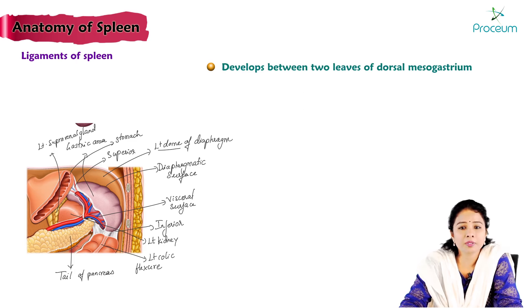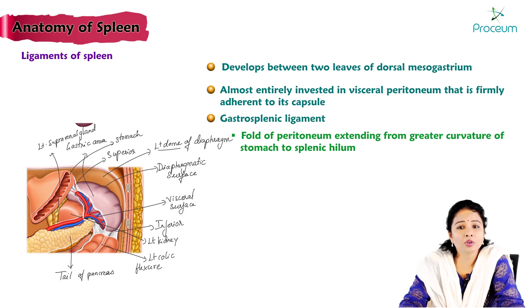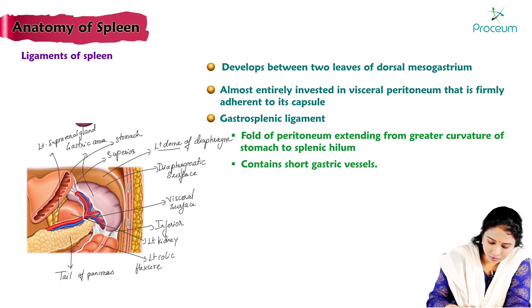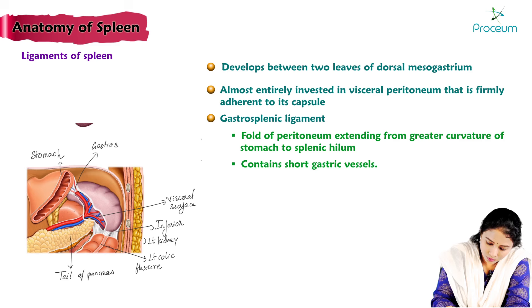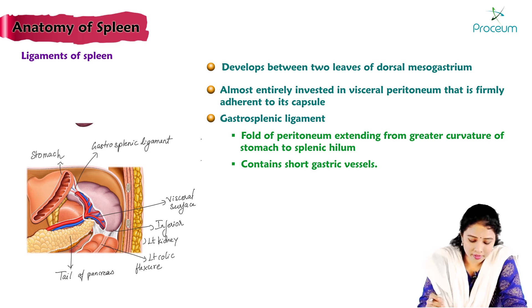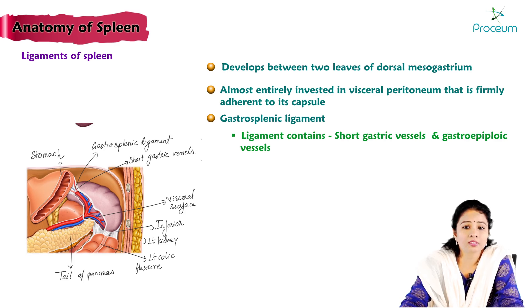Ligaments of the spleen: the spleen develops between the leaves of the dorsal mesogastrium and is almost entirely invested with visceral peritoneum, which is firmly adherent to the capsule. The gastrosplenic ligament is a fold of peritoneum extending from the greater curvature of the stomach to the splenic hilum. It contains the short gastric vessels and gastroepiploic vessels, and separates the greater sac from the lesser sac.